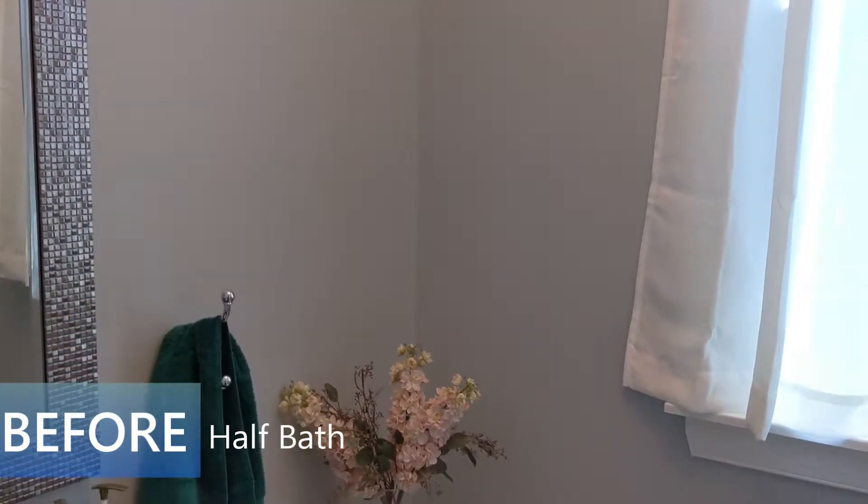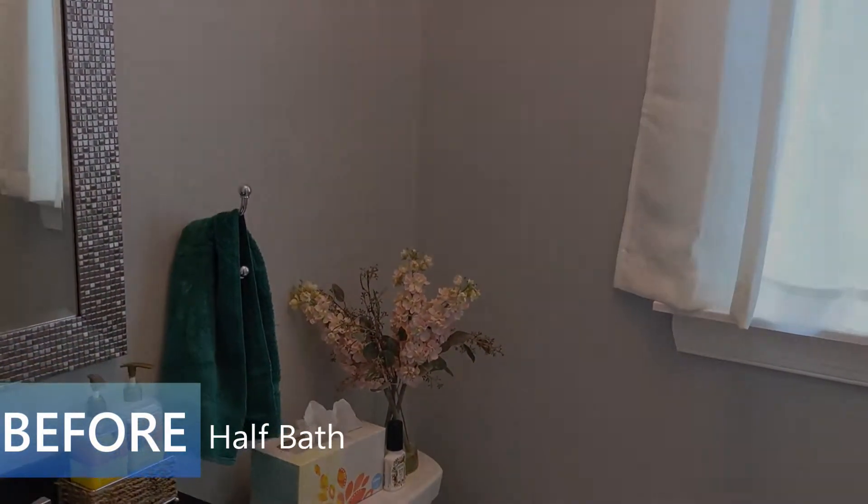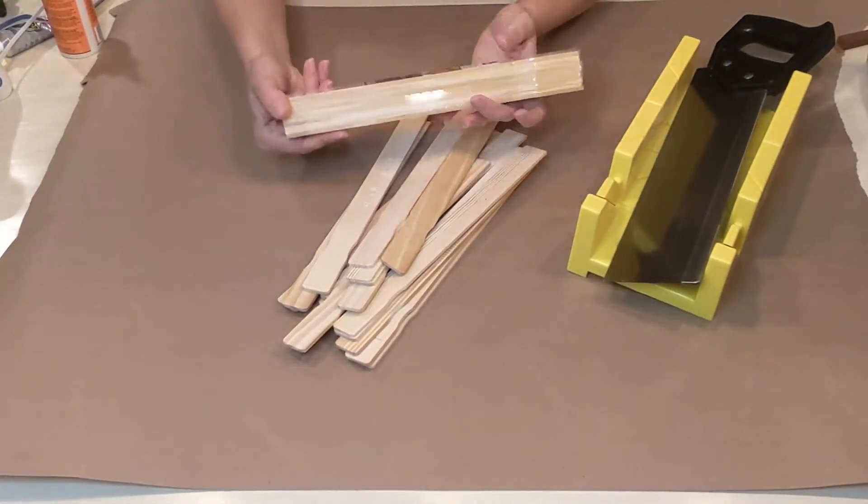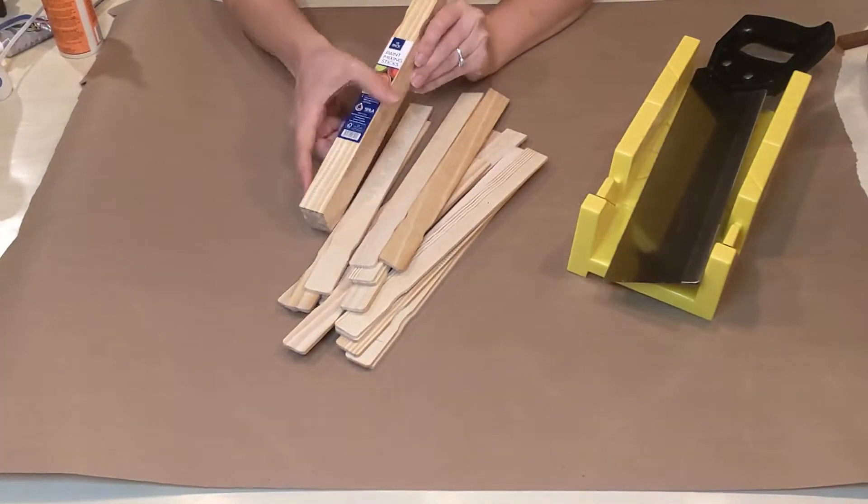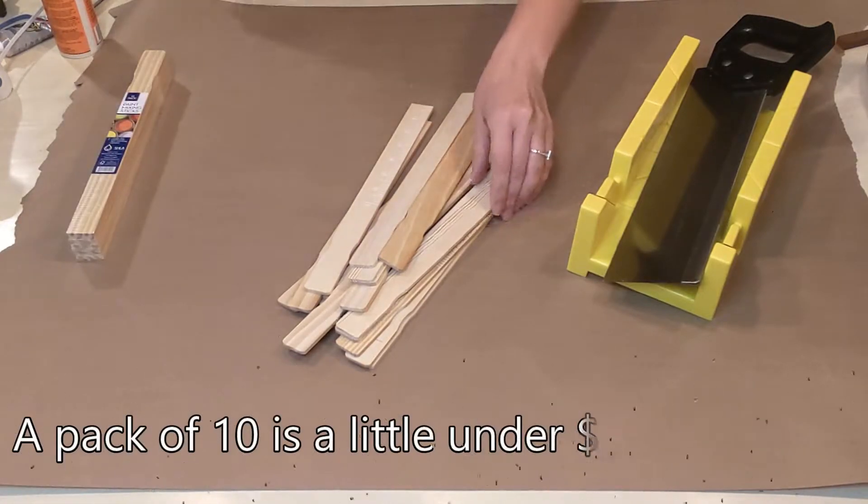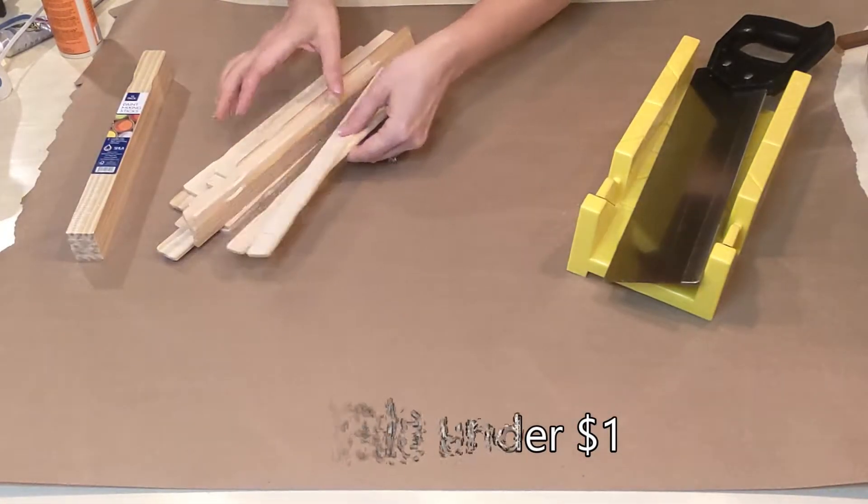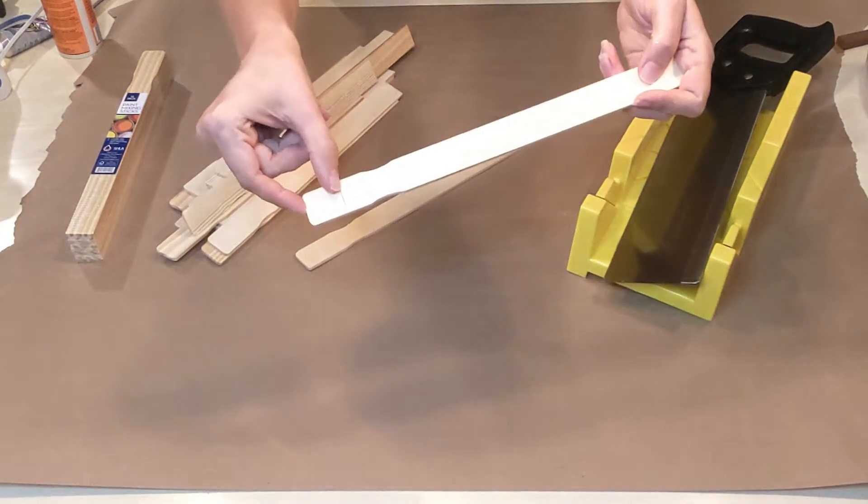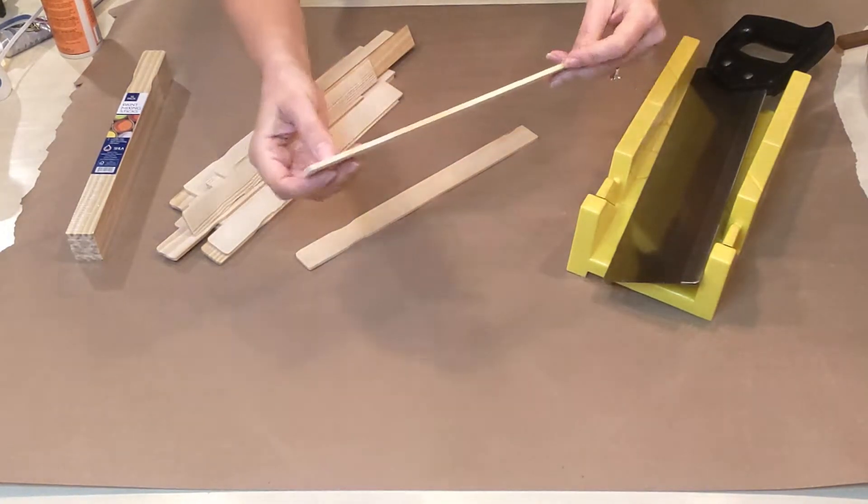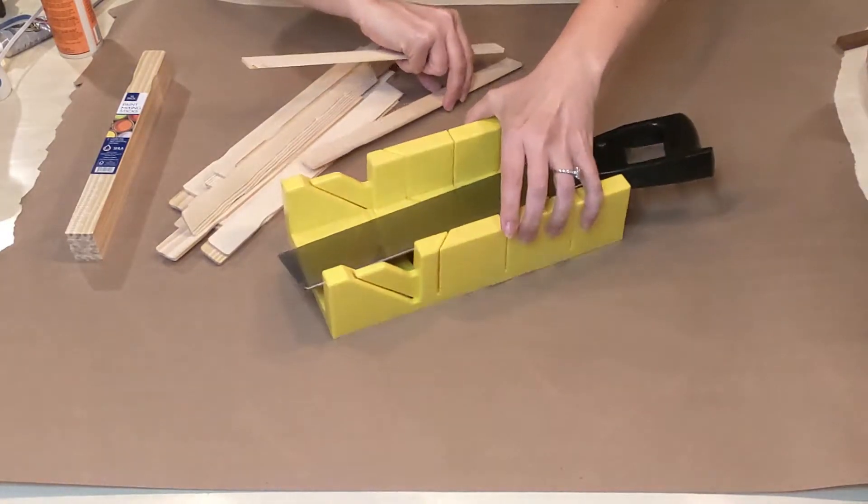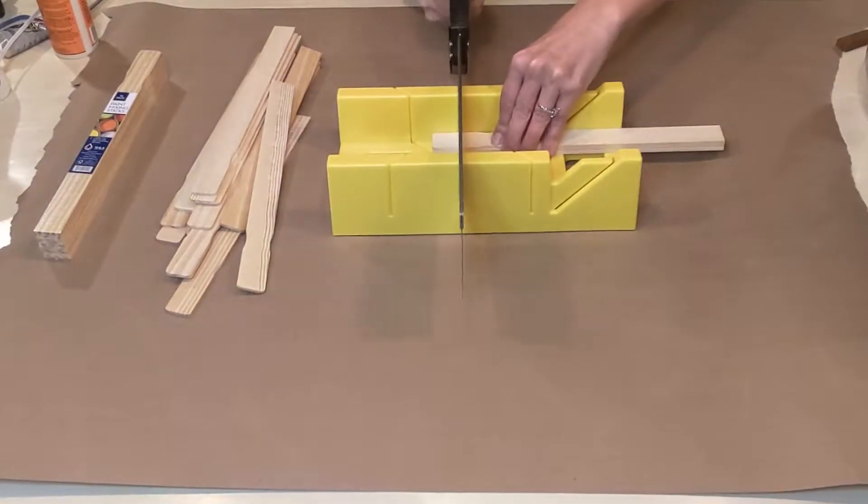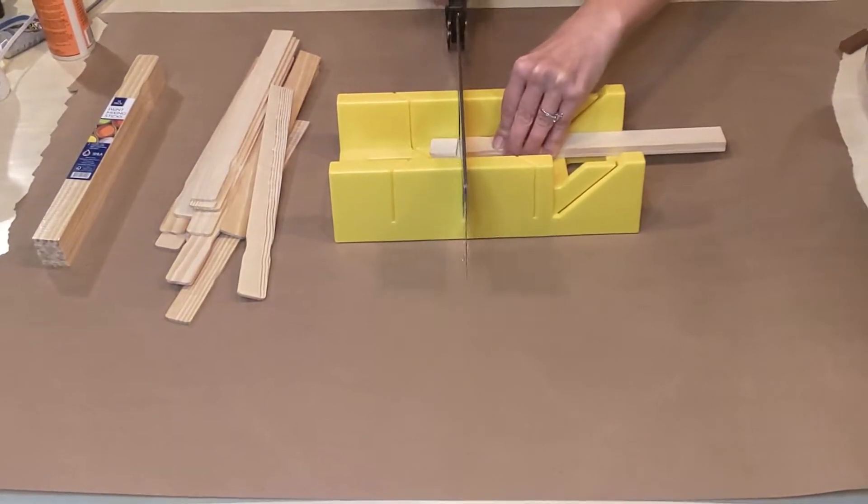So we're going to be using a bunch of paint sticks for this. You can get them 10 to a pack at Lowe's or Home Depot and we're going to be using 16 that we're going to cut down to 11 inches. They're 12 inches long, so just going to be cutting off about an inch and I'm going to be using my handy little miter saw to do this.